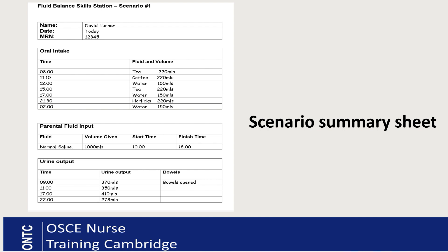The summary sheet also tells you the IV input — what kind of IV fluids the patient had, how much in the last 24 hours, what time each IV bag started, and what time it finished. Finally, it gives you the patient's urine output for the last 24 hours. If your patient opened their bowels, it will just say so as a comment — there is no given amount to add into your balance.